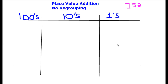So what is a place value mat? This is what they generally look like. It usually starts with a three-column chart or table, and you have a hundreds column, a tens column, and a ones column. Depending on the types of numbers you're using, you can add additional columns — for example, a thousands column. But generally, I'm going to be mainly using hundreds, tens, and ones. This is something you can also just create on your own with pen and paper.